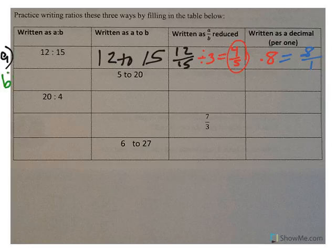So let's go to line B. In line B, they start with the 5 to 20. Five comes first. So with the colon, five comes first. With the fraction, five goes on top. Don't forget to reduce. 5 20ths reduces both by five, and you end up with 1 4th. As a decimal, that's .25.